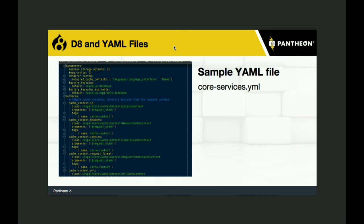Here's what a sample YAML file looks like — this is the core services YAML file. Skipping the parameters section and going to services, it defines services available in Drupal. The first one is called cache context by IP, noting the class that handles this service, the arguments it accepts by default when instantiated, and tags indicating the group of technology it belongs to within Drupal.